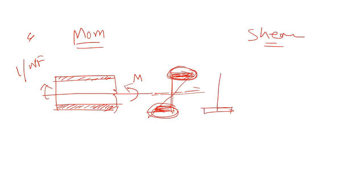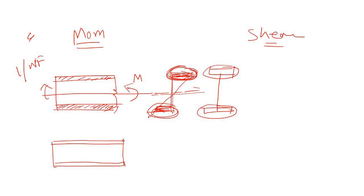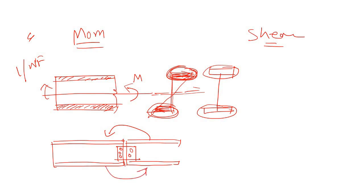Majority of the stress is carried by the flange. So if you are going to use a splice in your structural steel beam — let's say this is one beam and this is another beam — to make sure that all the moment is transferred from one beam to the other through the splice, you have to ensure that the flanges are connected. If the flanges of the two successive beams connected through the splice are connected, then you can say this splice is a moment splice.